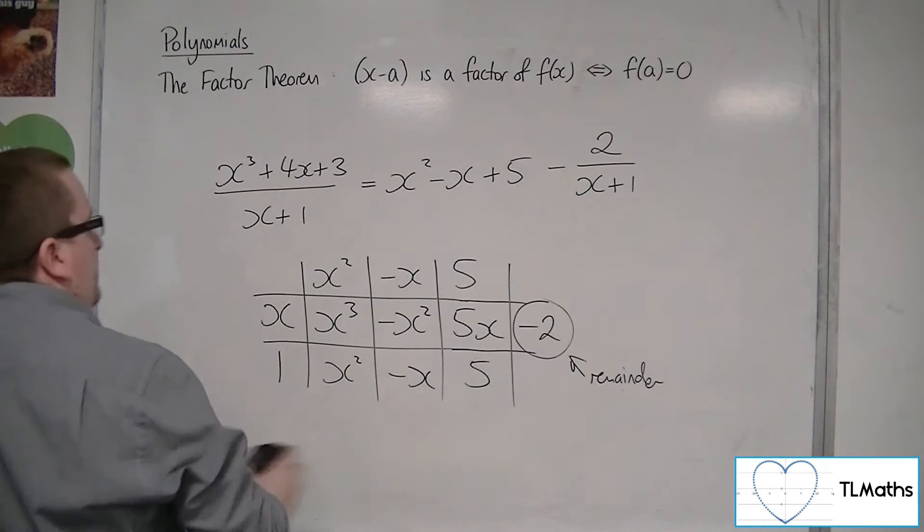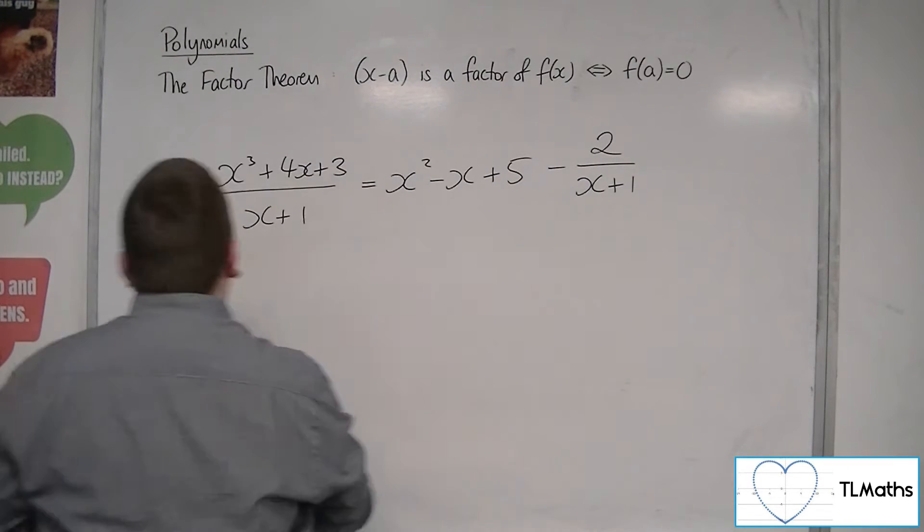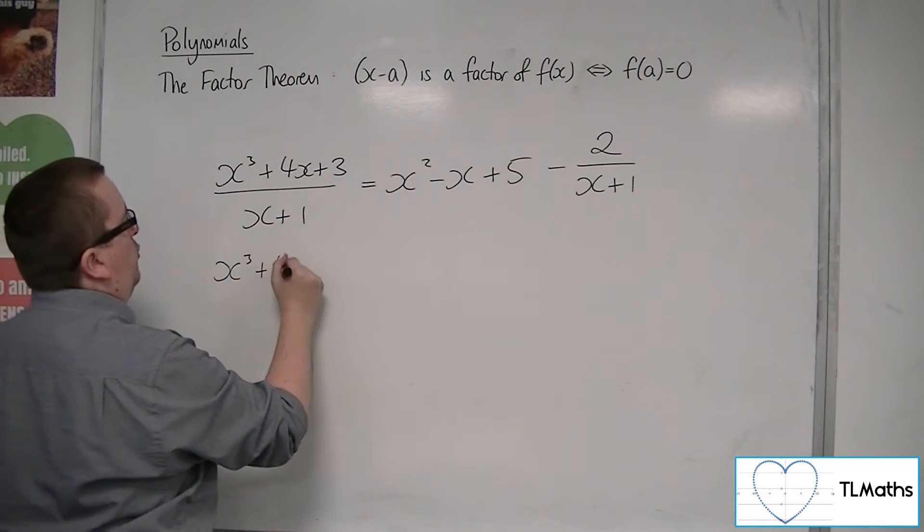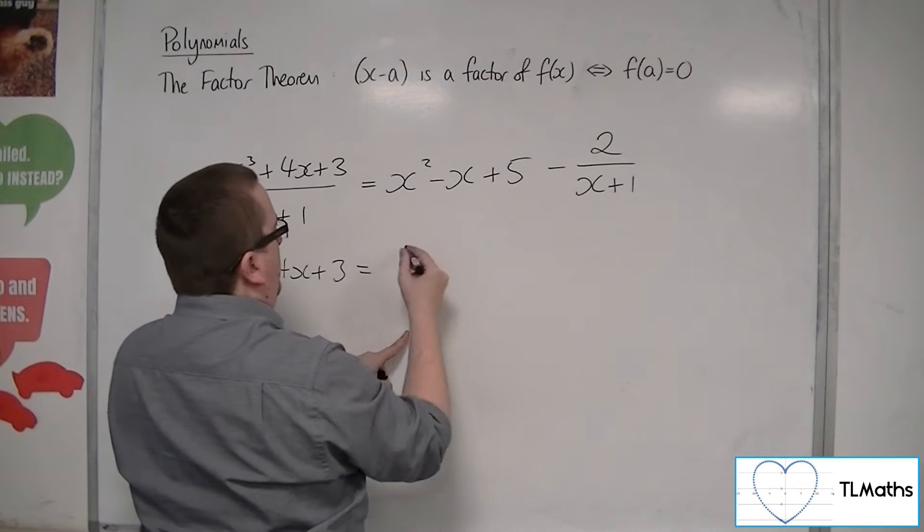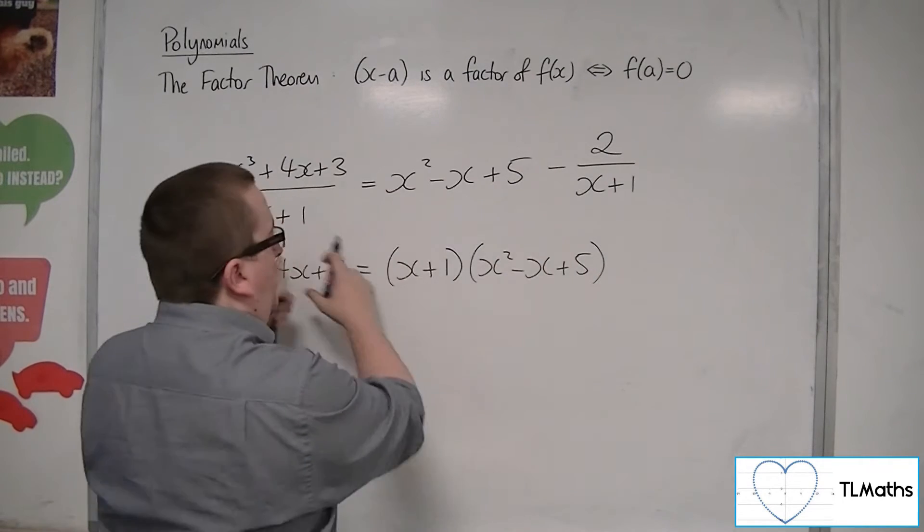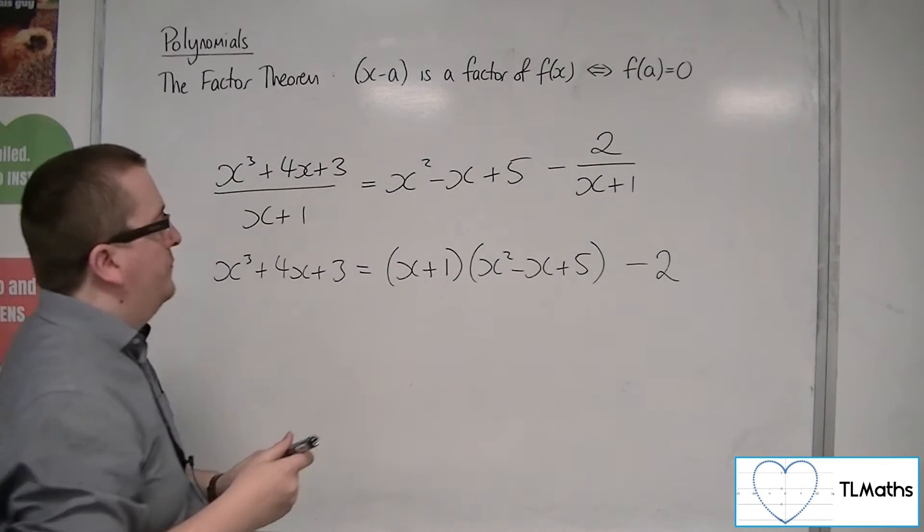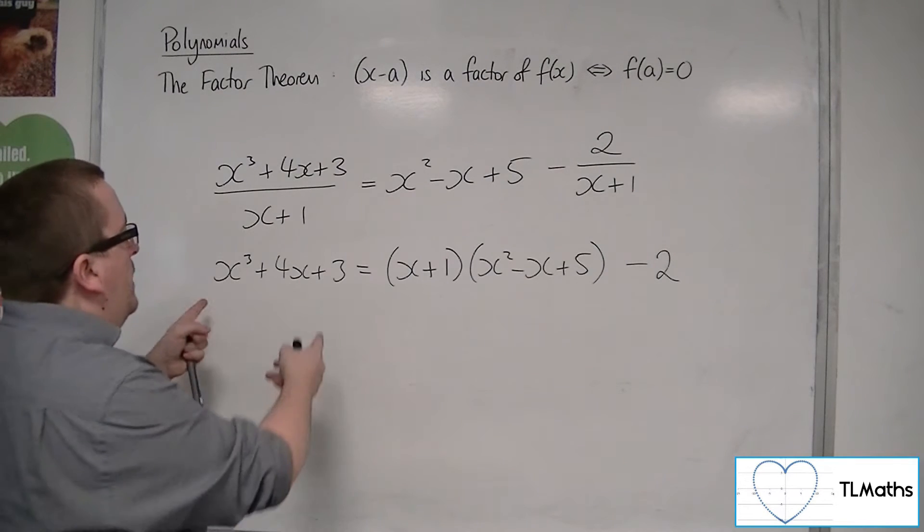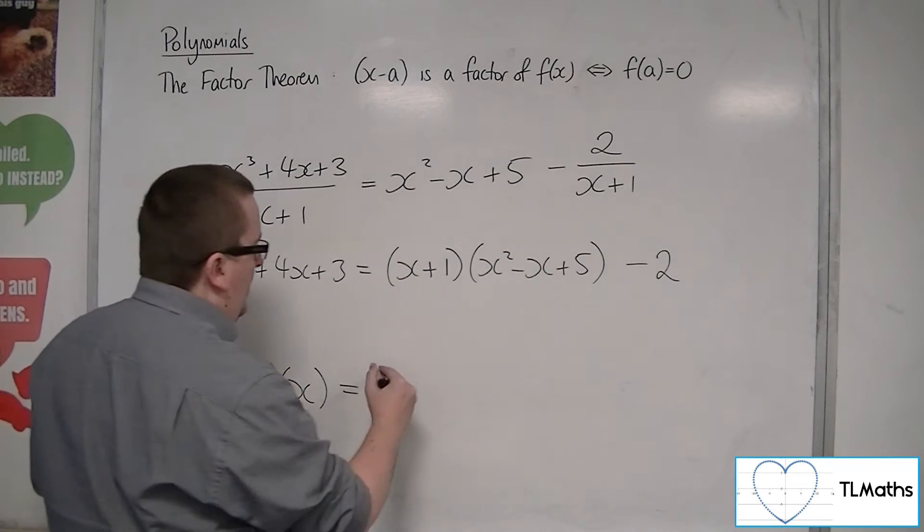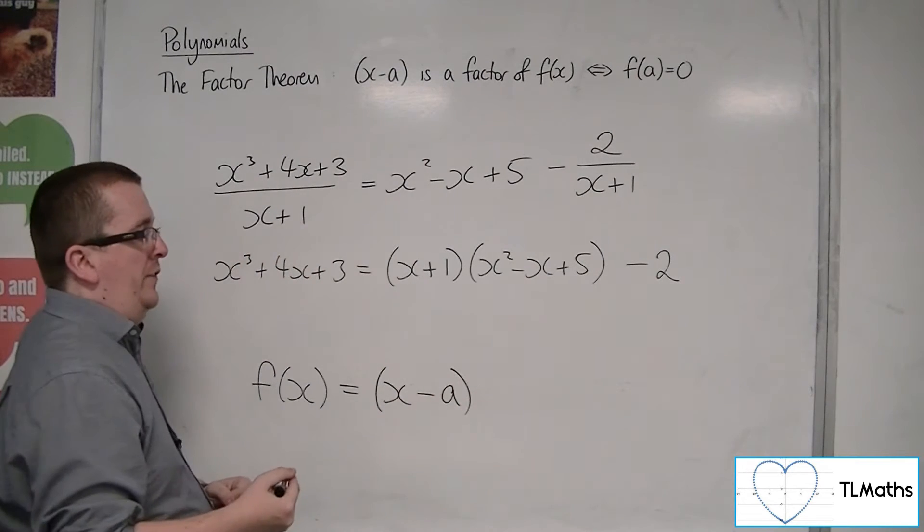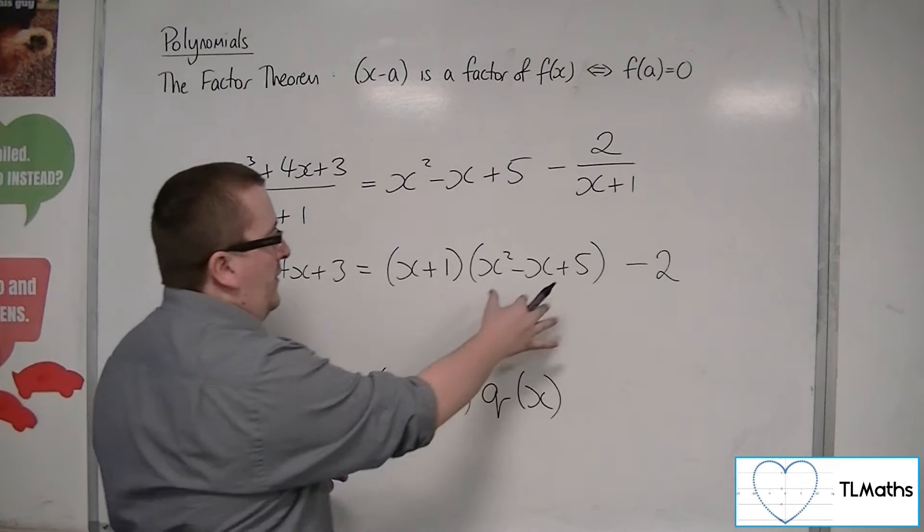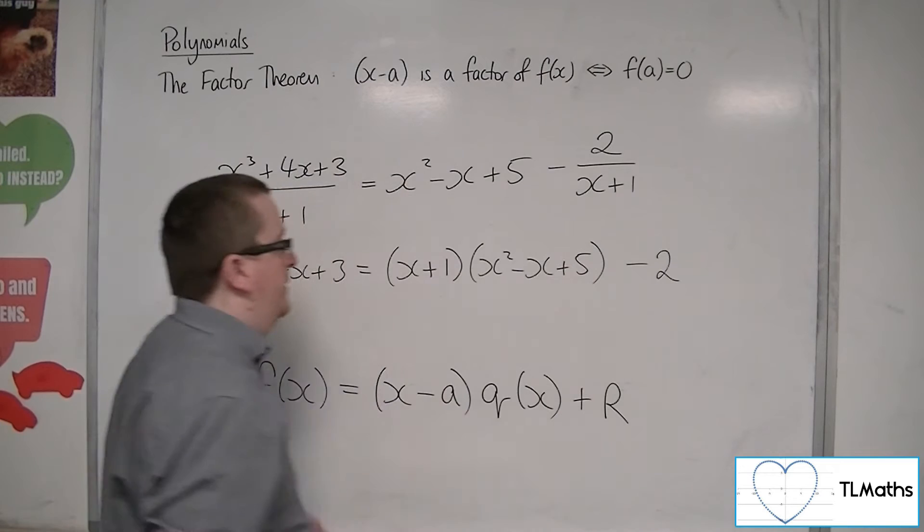So what we're now going to do is if I multiply everything by that x plus 1, we're going to get x cubed plus 4x plus 3. So I'm going to multiply this by x plus 1. So x plus 1 times by x squared minus x plus 5. And then I'm multiplying the x plus 1 by this as well. So I just get left with the minus 2. So what we find is that whatever function you're starting with, this f of x, you can write it as some linear function, let's say x minus a, times by some quotient function, some other function of x, plus some remainder.